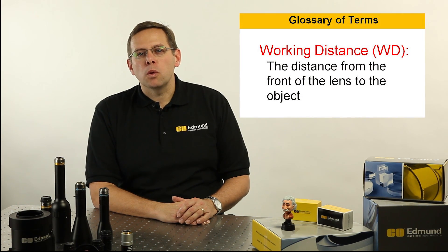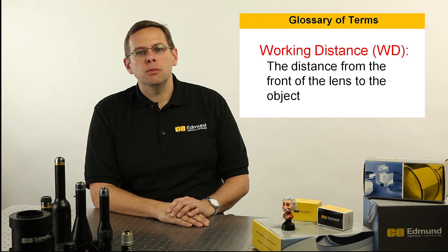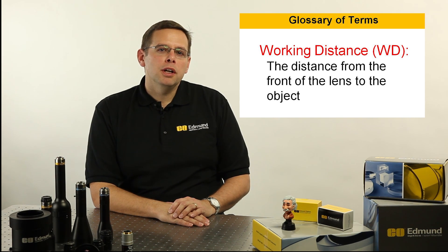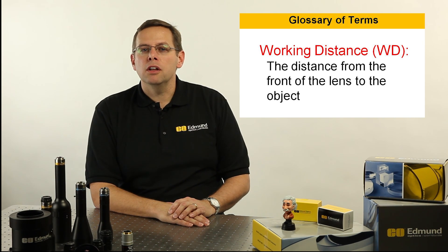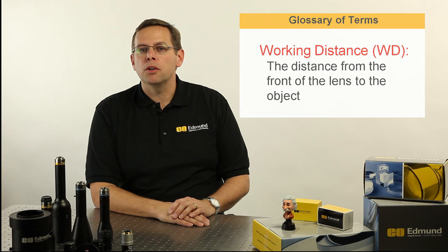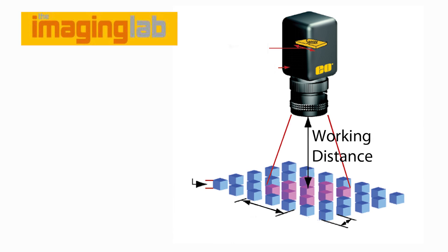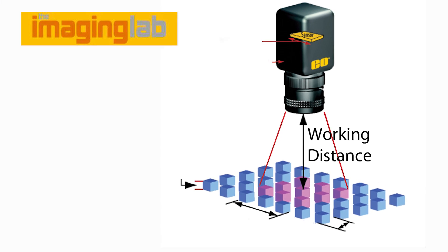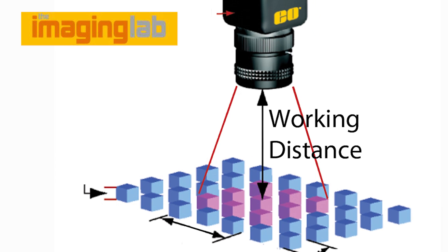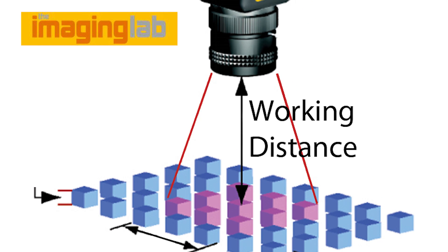There are many things that drive the working distance from an application point of view that need to be considered. In some cases we might have a robotic attachment that is moving underneath the camera system and near the object, or some other moving device that needs to be cleared. In other situations there is limited space to fit a camera and lens system in relation to the object and the working distance can be very short.